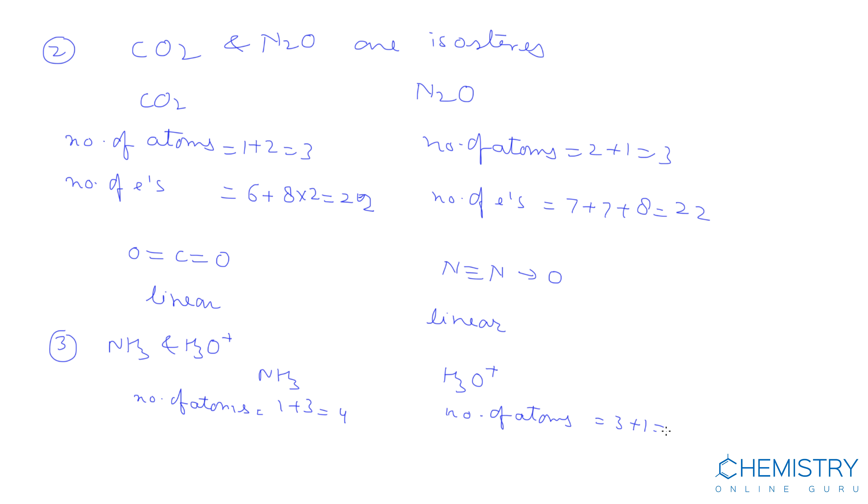In the case of hydronium ion, number of atoms: 3 plus 1 equals 4. Number of electrons in ammonia: 7 plus 3 equals 10. Number of electrons in hydronium ion: 3 plus 8 minus 1 due to positive charge equals 10.